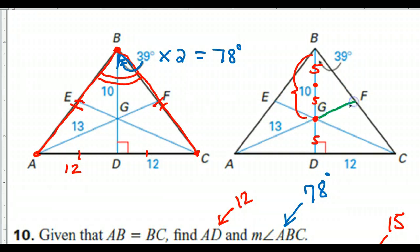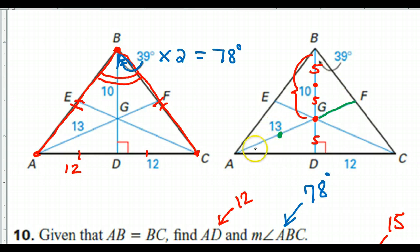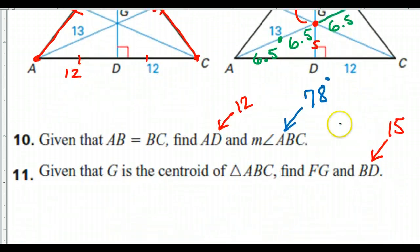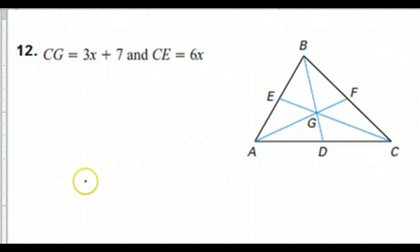Now for finding FG — FG is the small part, so I need to look at the big part, which is 13. I'll take that big part and split it in half to get three equal pieces. Half of 13 is 6.5, so I'll have 6.5, 6.5, and 6.5. That means FG equals 6.5.